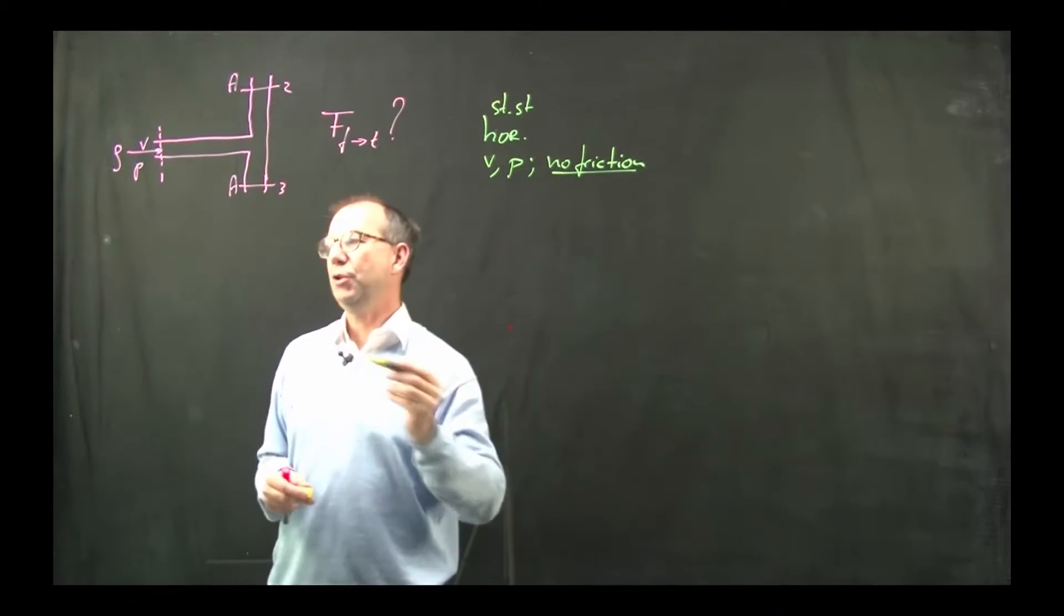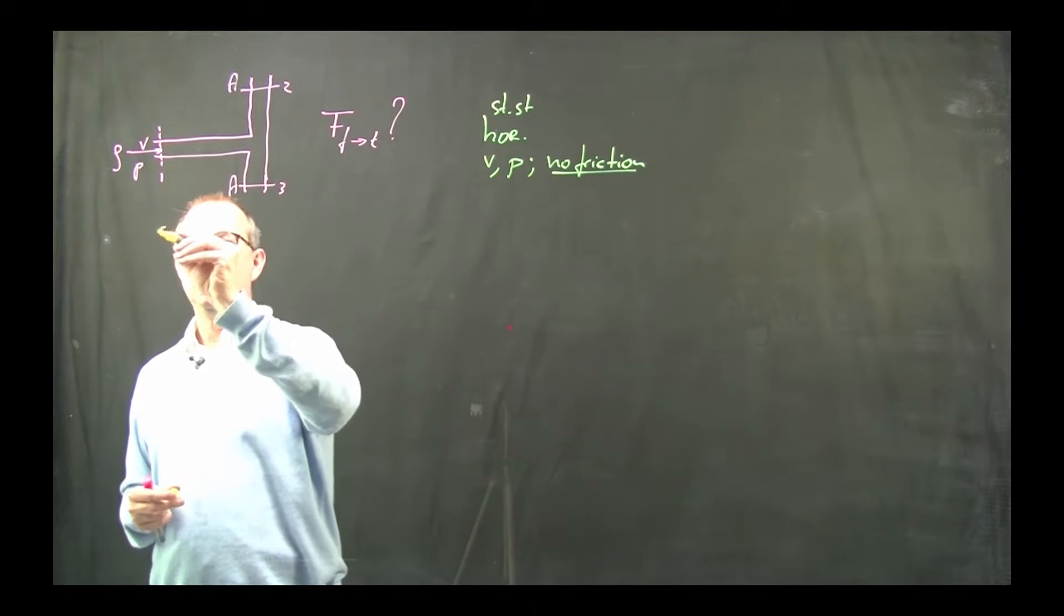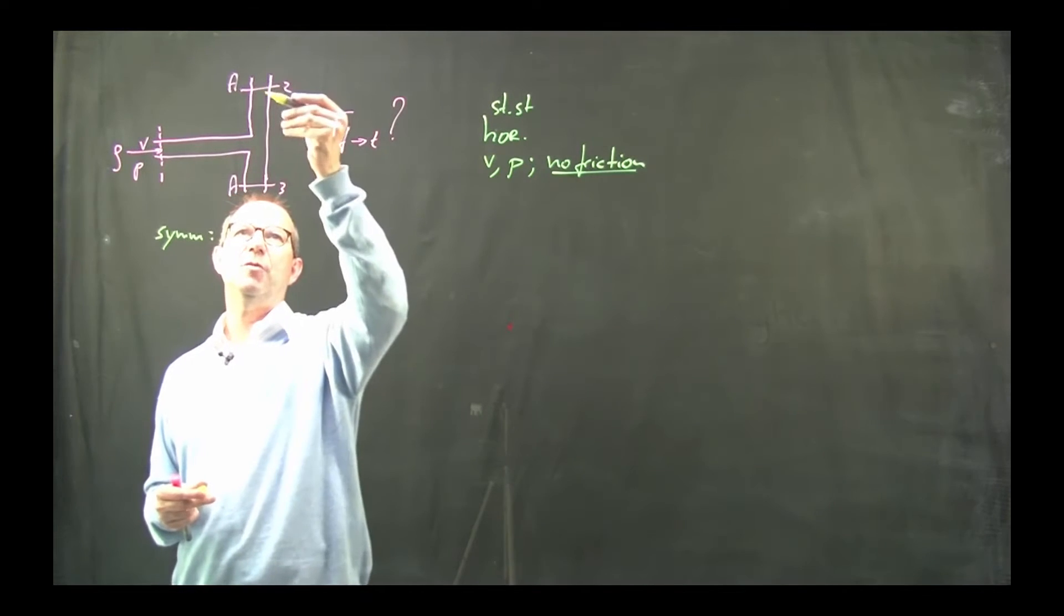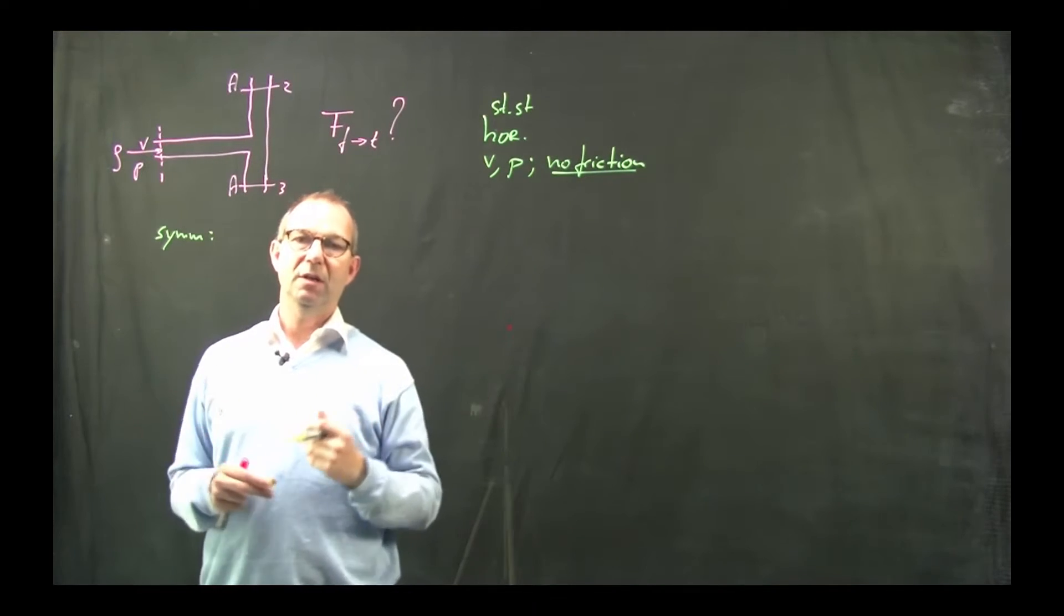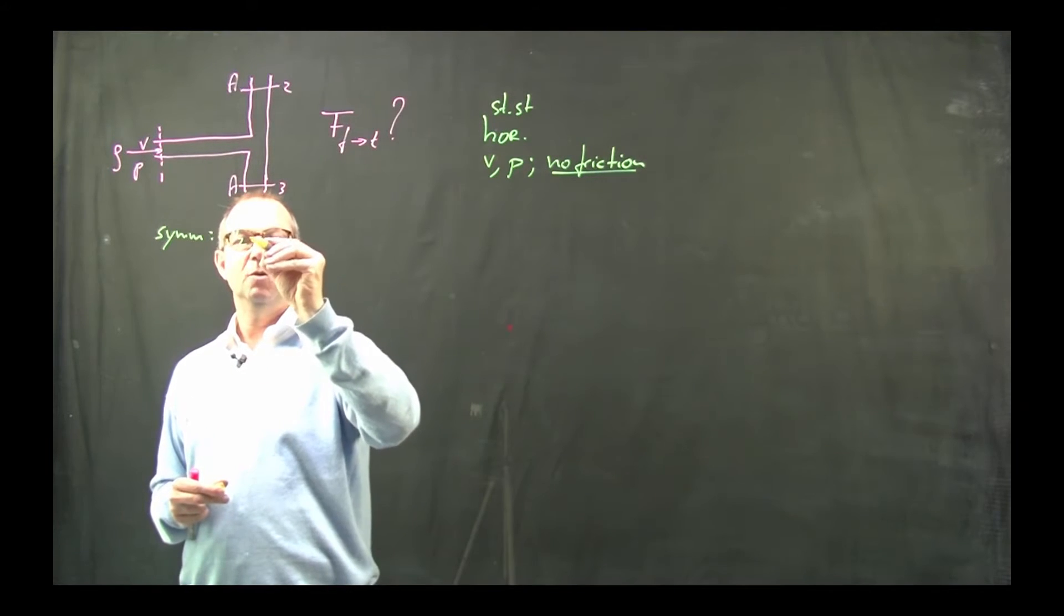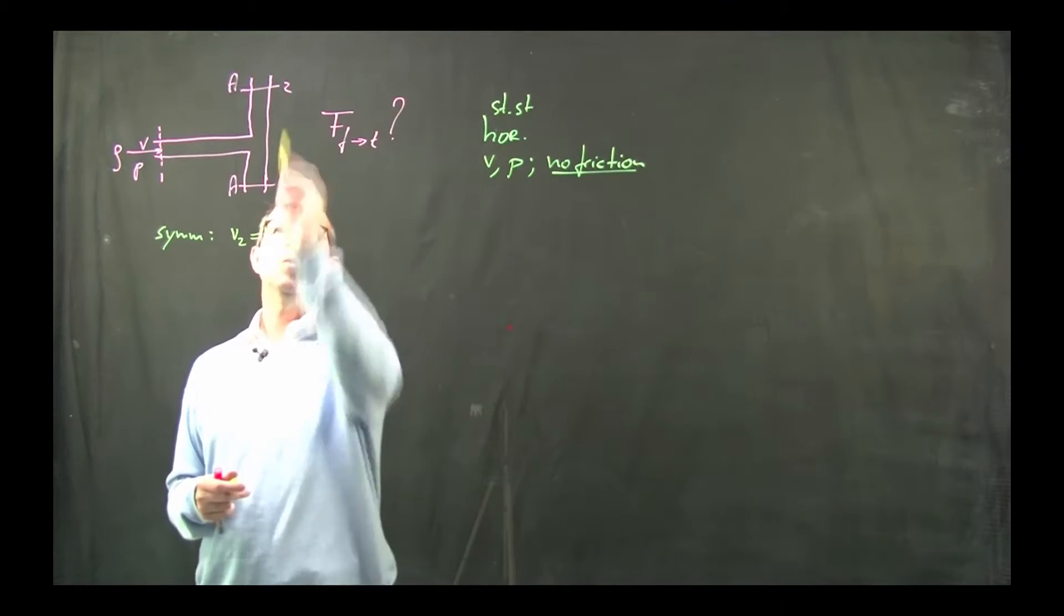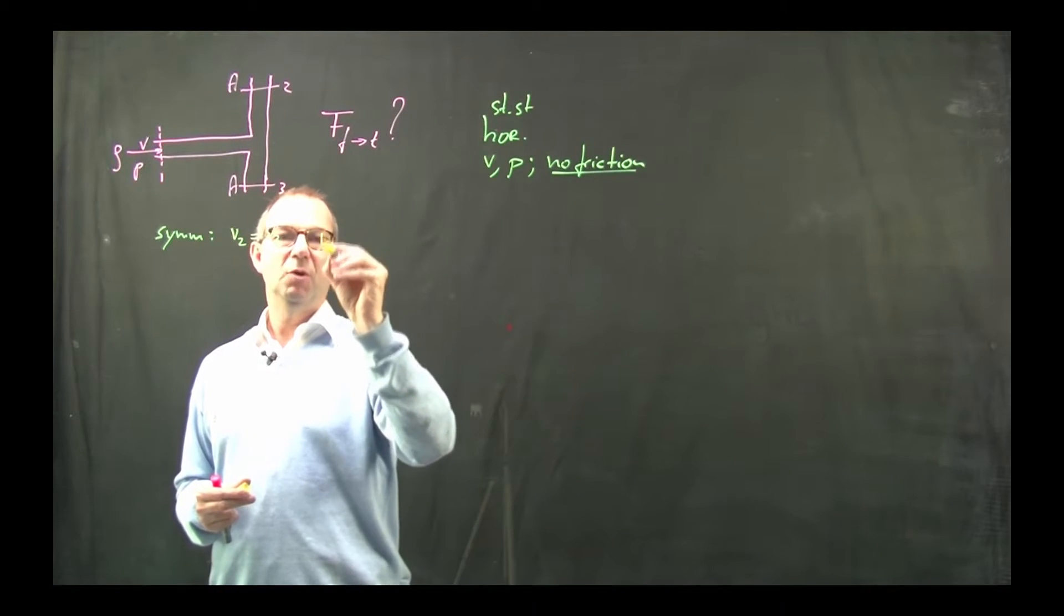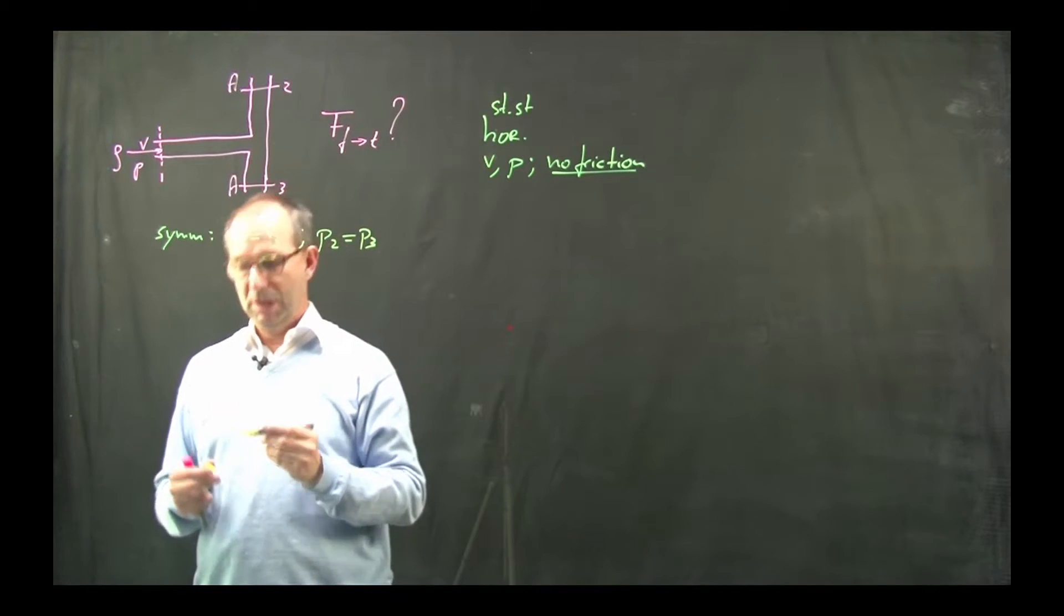Alright, so the first step is finding the velocities here. And for that we set up a mass balance. But first we can use that it's a symmetric case. There is no difference between exit 1, 2 and 3. So upfront I know that in absolute sense the two velocities will be the same. Not as a vector of course. One goes up, the other one goes down in the drawing. And the same holds for the pressure.